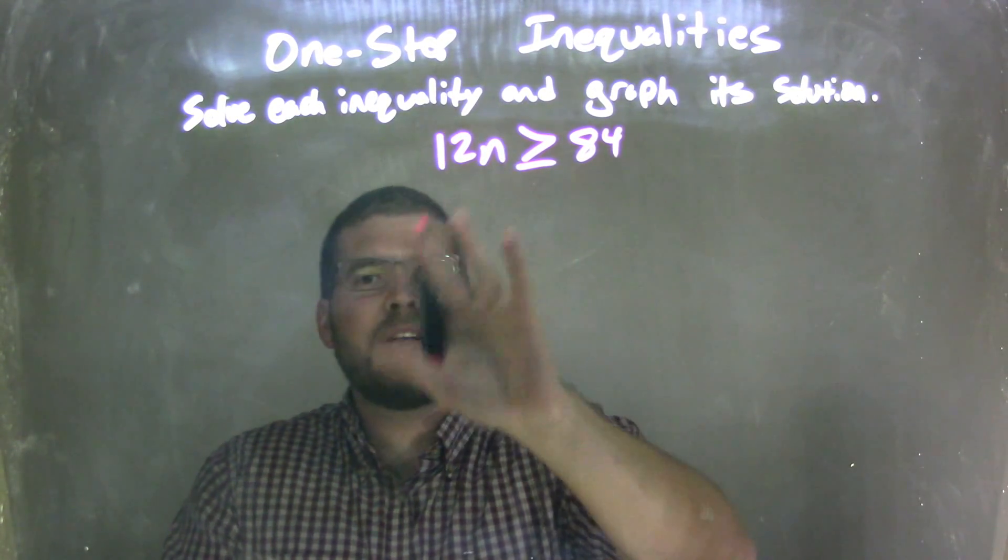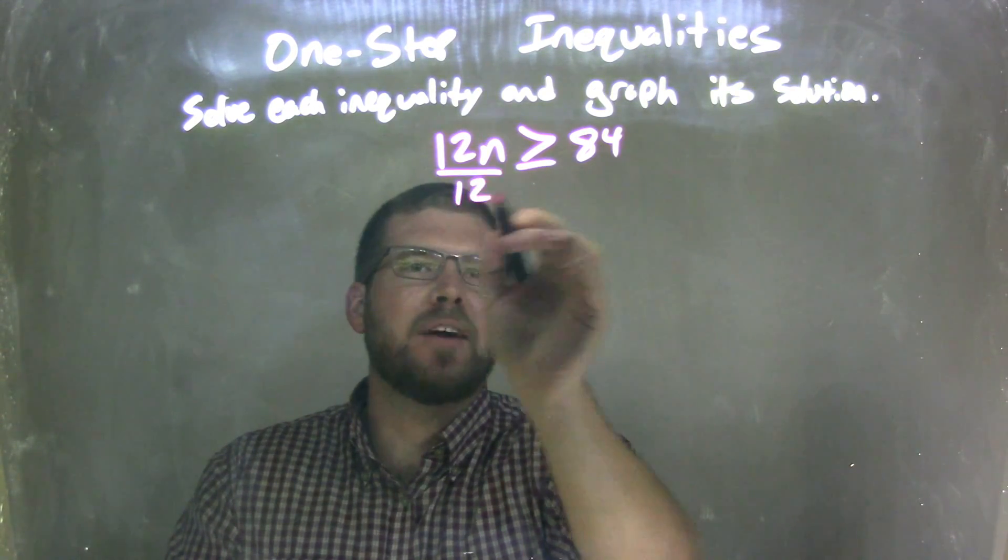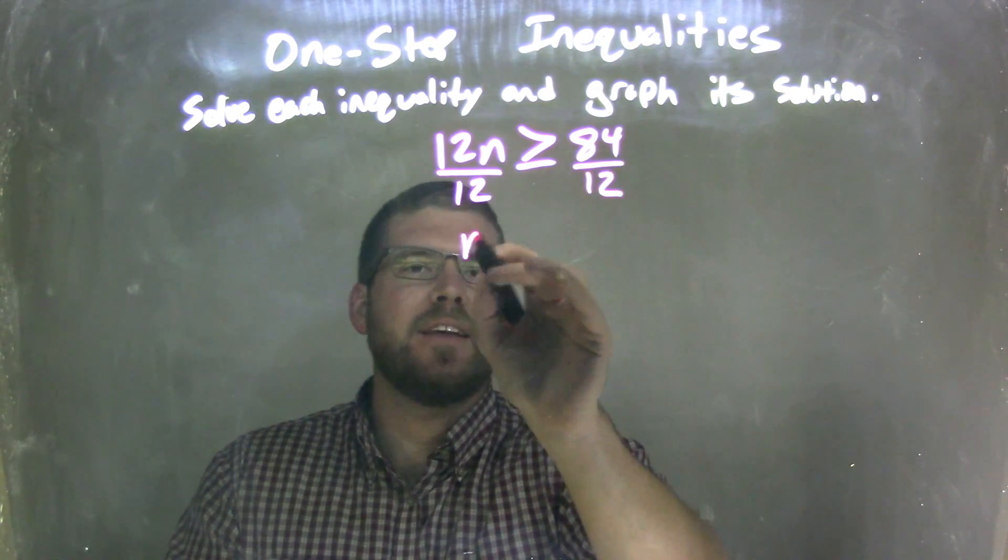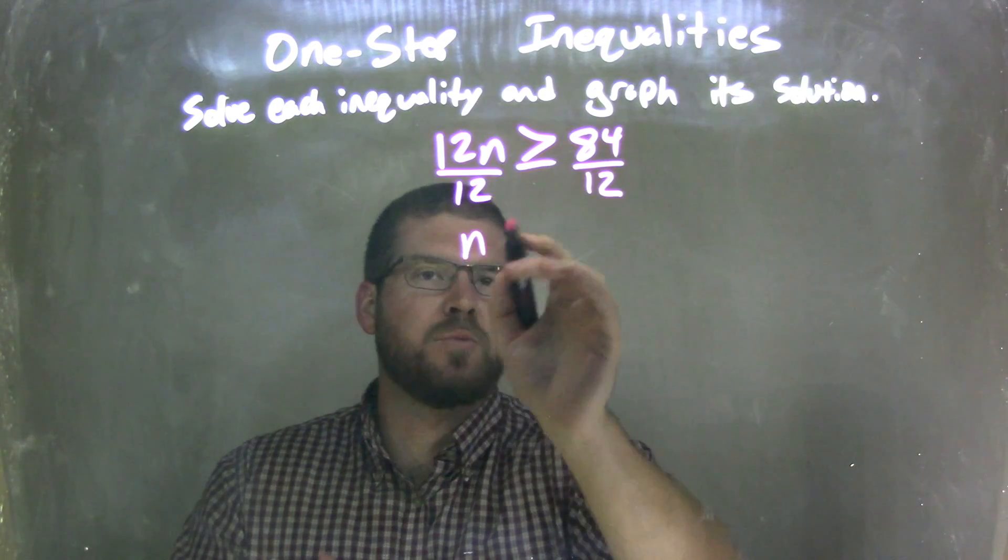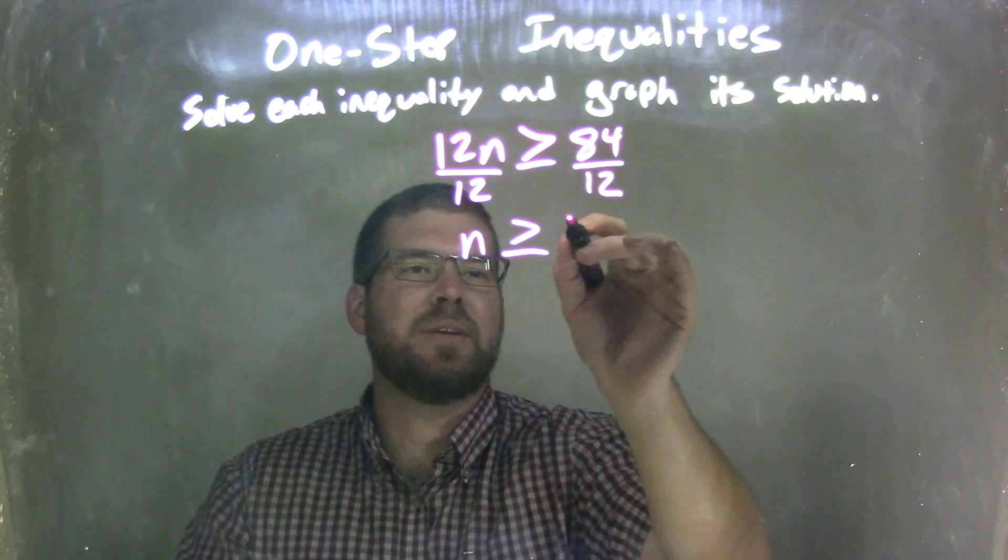Well, I first need to isolate n. It was multiplication, 12 times n. So now I'm going to divide by 12 on both sides. That leaves me an n by itself on the left, which is what I wanted, is greater than or equal to, well, 84 divided by 12, and that comes out to be 7.